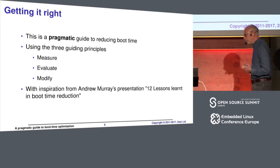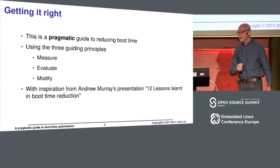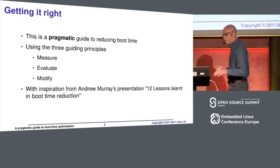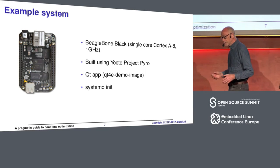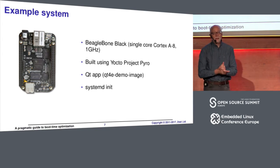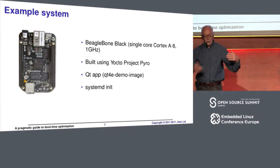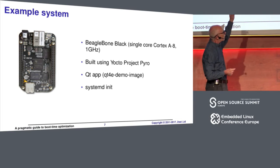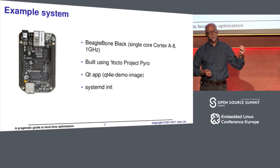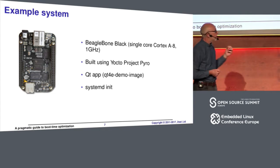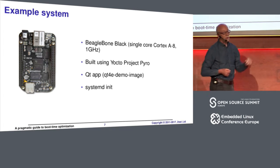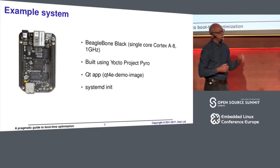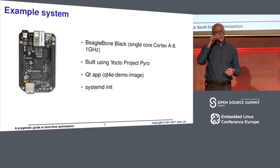Attribution here goes to Andrew Murray, whose presentation at ELC Dusseldorf inspired this approach. I'm going to attempt a live demo, but if it doesn't work I'll skip over that bit. For measurements I used a BeagleBone as a demo system, starting with a pretty much vanilla Yocto project build. I used the Qt4e demo image, and the one thing I changed from the default is switching to systemd, which seems to be the more common use case these days.